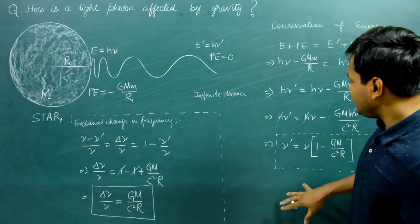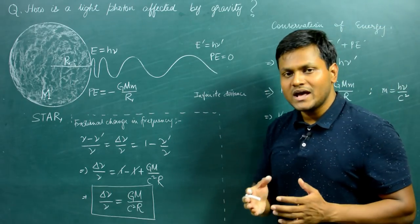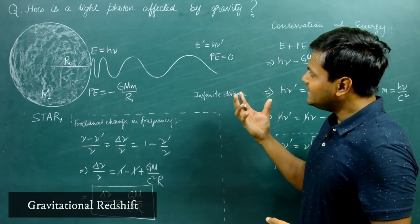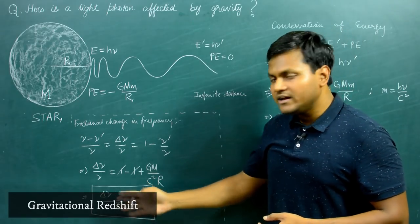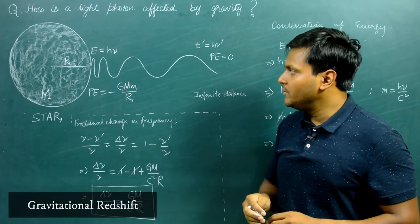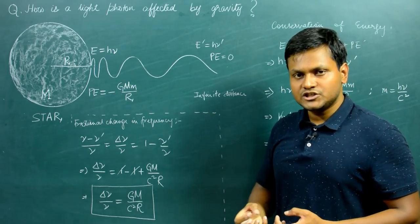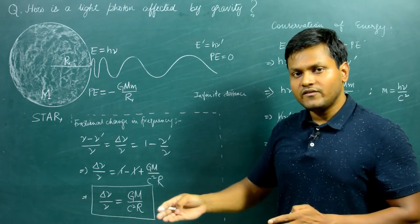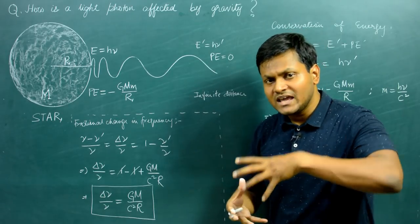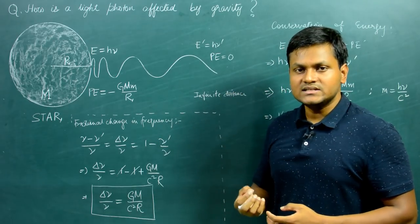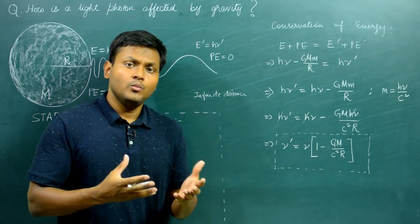This is the fractional change in the frequency of the light photon as it escapes the gravitational potential of the star completely. This phenomenon — where a light photon traveling away from a star experiences a change in its frequency — is known as gravitational redshift. It is called redshift because the frequency of visible light decreases as it comes out of the star's gravitational field, shifting towards the red end of the spectrum. It is called gravitational redshift to distinguish it from Doppler redshift, where the redshift happens due to relative motion between the source and the observer — here it is because the photon spends energy escaping the gravitational potential.